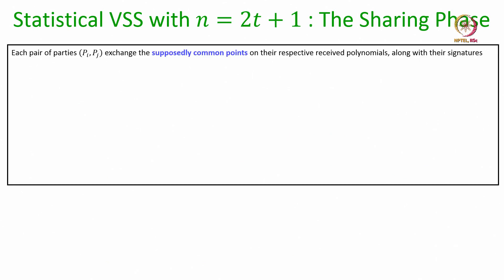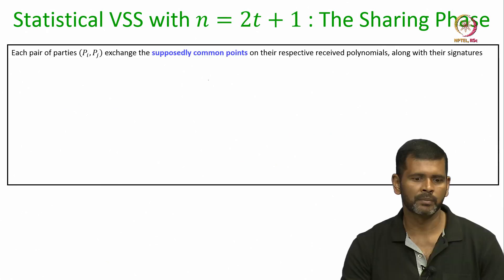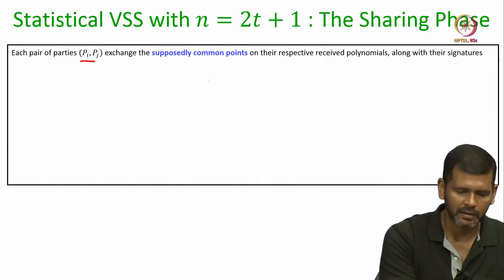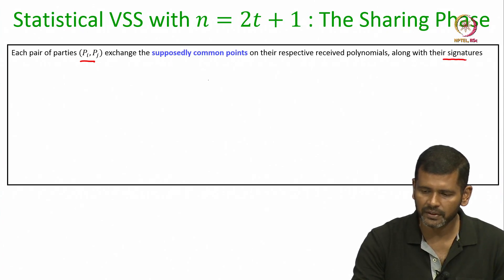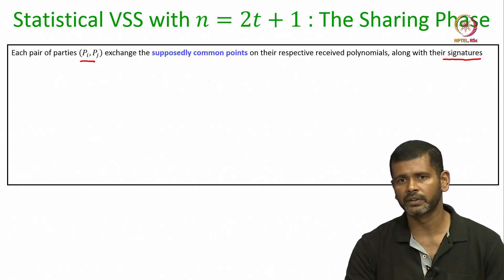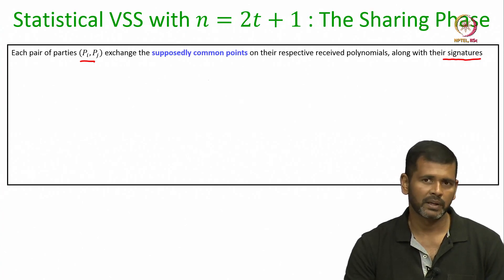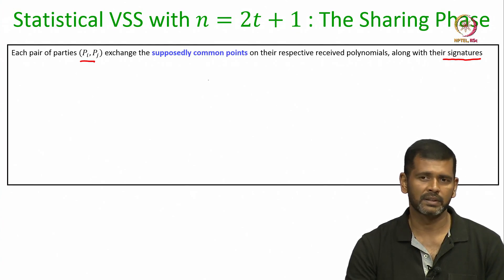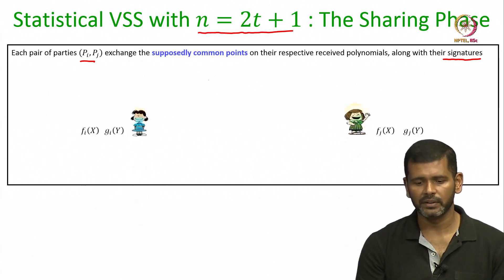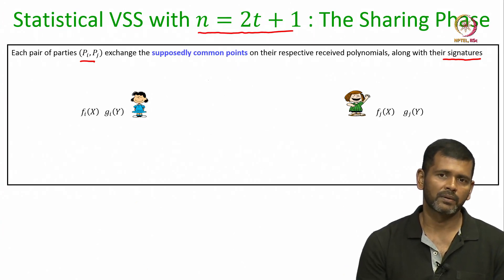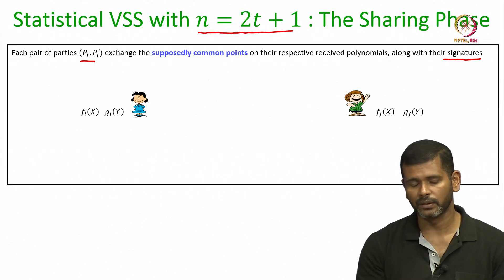If the dealer is not discarded and every party has locally checked that its row and column polynomials are t-degree polynomials, they proceed with the pairwise consistency check, where every pair of parties exchanges the supposedly common points on their respective polynomials and also puts their IC signatures on those common points. This is because, looking ahead, we want to generate a 2D secret sharing of the dealer secret with IC signatures. The pairwise consistency test is very similar to what we did for perfectly secure protocols, except that here the parties also provide IC signatures on the common points.